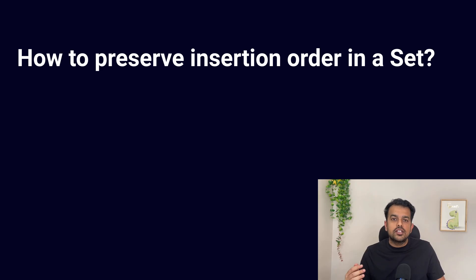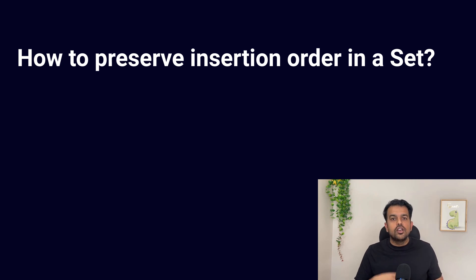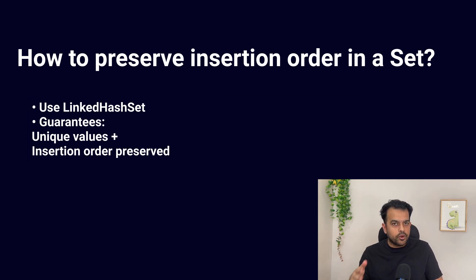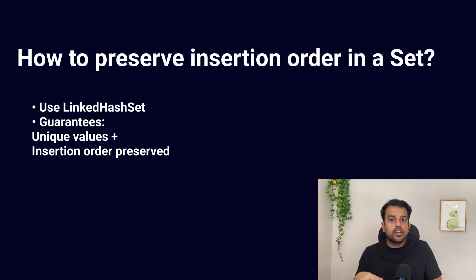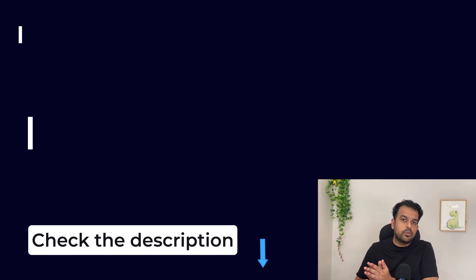The final question: how do you preserve insertion order in a Set? Use LinkedHashSet. It stores data using hash buckets like HashSet but also keeps a linked list of insertion order internally, so values are unique and the iteration order matches the order in which you added elements. Key point: LinkedHashSet means unique values and insertion order is preserved.